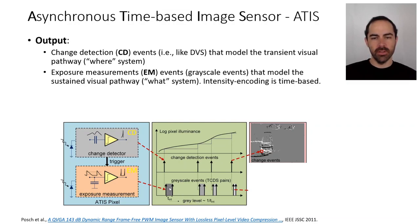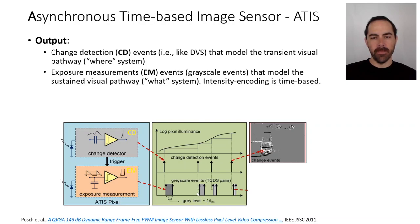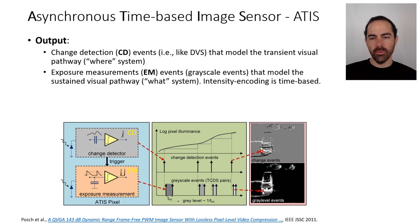Basically there are three events: the first is the change detection event, and then two other events whose time interval encodes the grayscale value. If the time is long, it means the light arriving at the photodiode was not very intense, so it takes a lot of time to integrate. If it's very bright, it takes very short time to discharge that circuit.